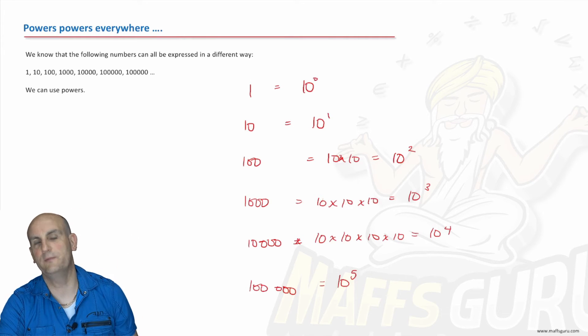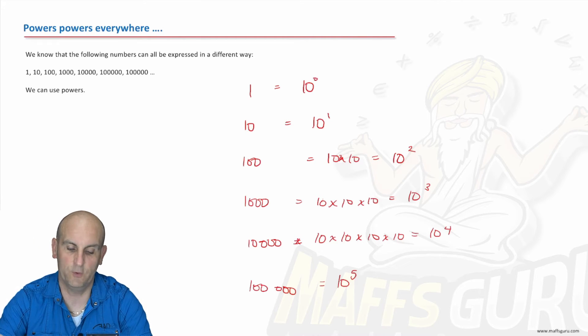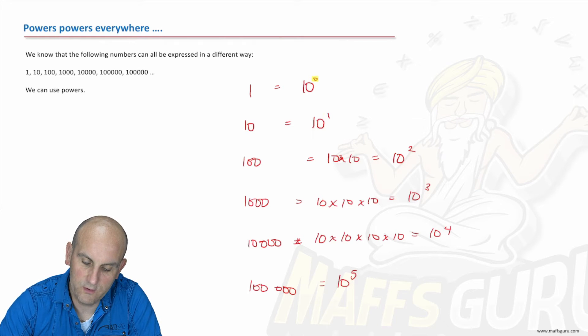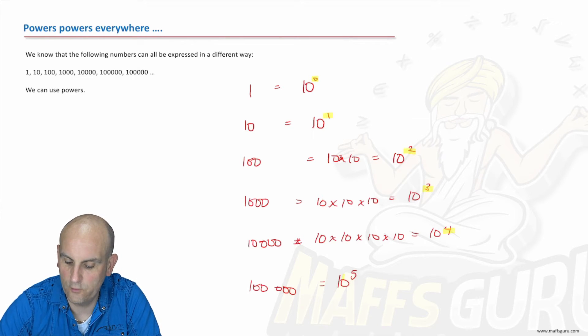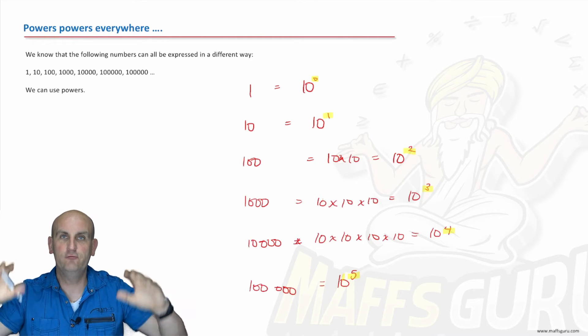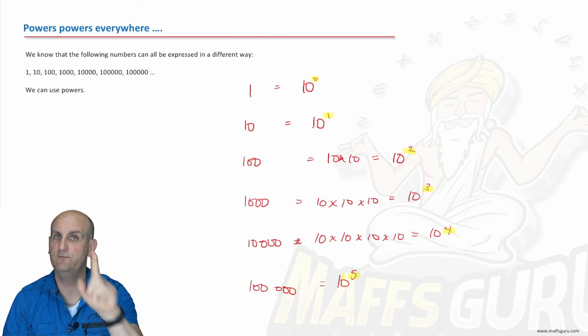That would be 10 times 10 times 10 times 10, which is 10 to the floaty 4. So with an extra zero, we seem to be going up in these floaty numbers. And that there would be 10 to the floaty 5, which would suggest that that becomes 10 to the floaty 1, and that would be 10 to the floaty 0.